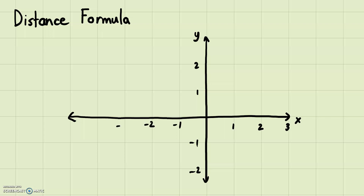For example, if I had two points right here and right here, the distance between those two points is very easy to find. You can just count: one, two, three, four — you went four times, so the distance should be four. That's easy to find.